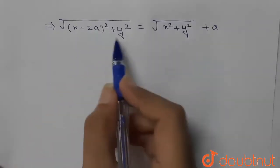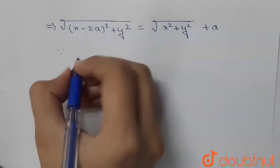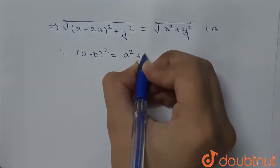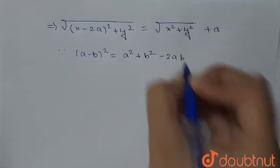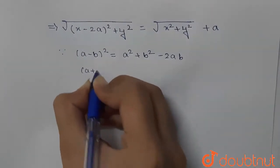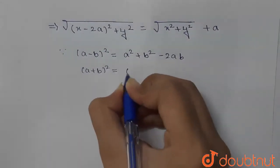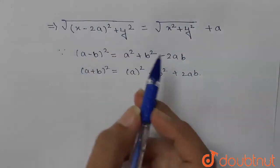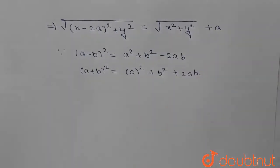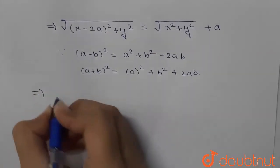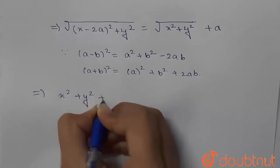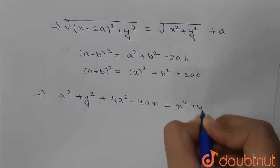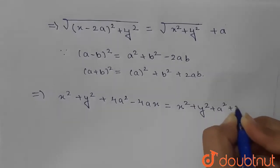Now we square both sides, using the identities (a − b)² = a² + b² − 2ab and (a + b)² = a² + b² + 2ab. The left-hand side expands using (a − b)² to give x² + y² + 4a² − 4ax. The right-hand side expands using (a + b)² to give x² + y² + a² + 2a√(x² + y²).